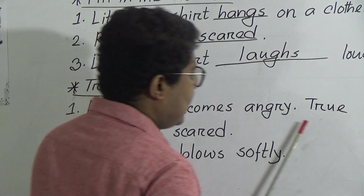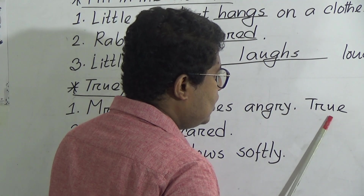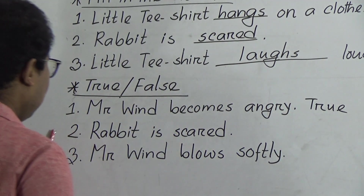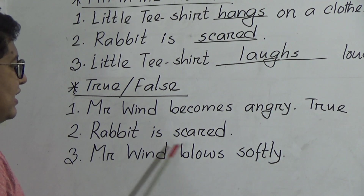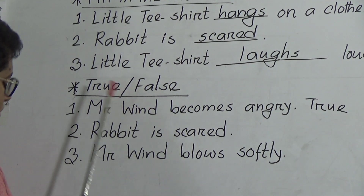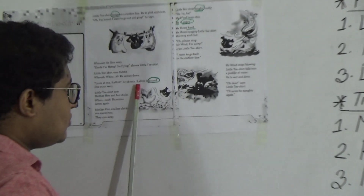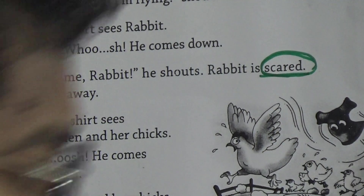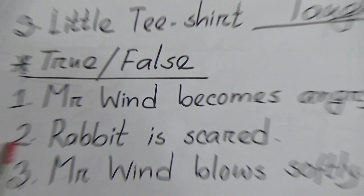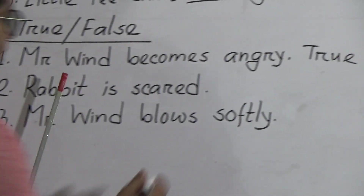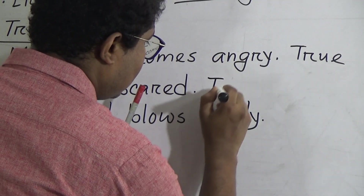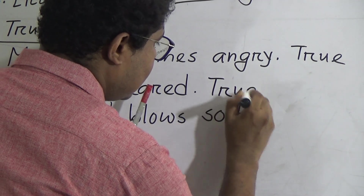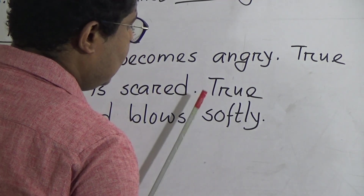Number two: rabbit is scared — true or false? We already found in the fill in the blanks that rabbit is scared. This is also true. So in the exam you will also write true, T-R-U-E — not just 'T.' Rabbit is scared — true.